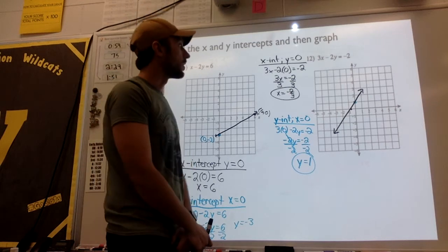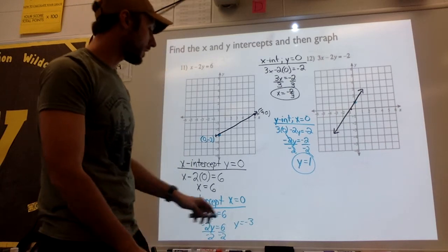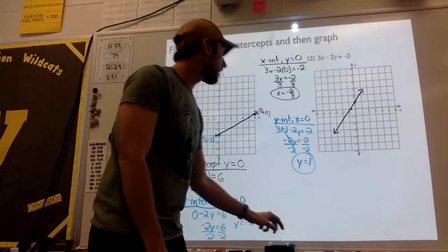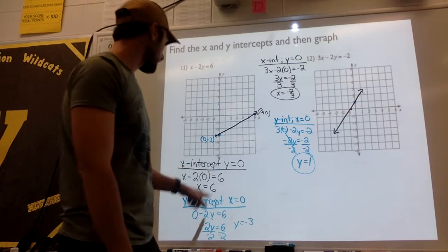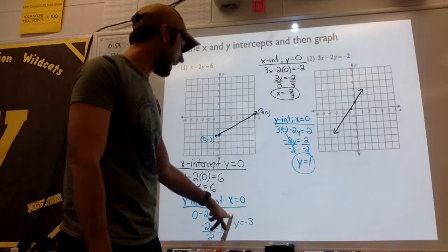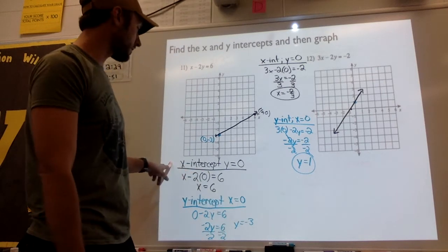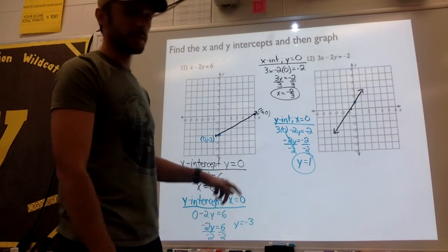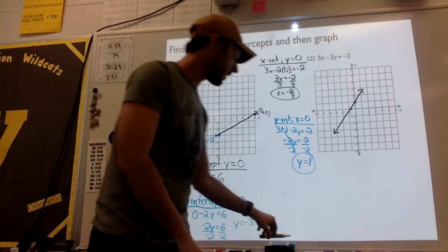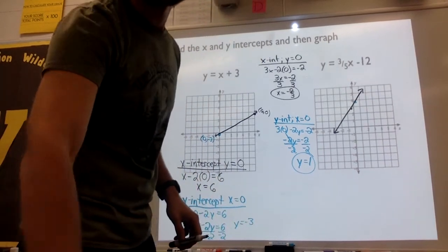Once again, to find the intercepts of a graph: to find the y-intercept, you set x equal to 0. To find the x-intercept, you set y equal to 0. Let's try a couple more.